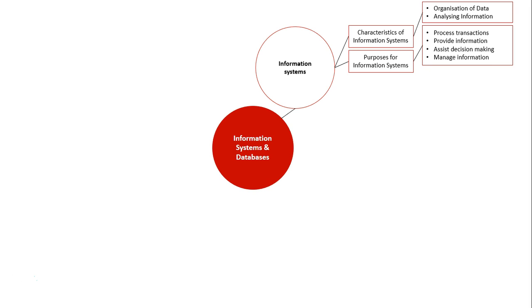The purpose of information systems correlates with the different units of this course. They can be used for processing transactions, providing information, assisting decision making, and managing information.